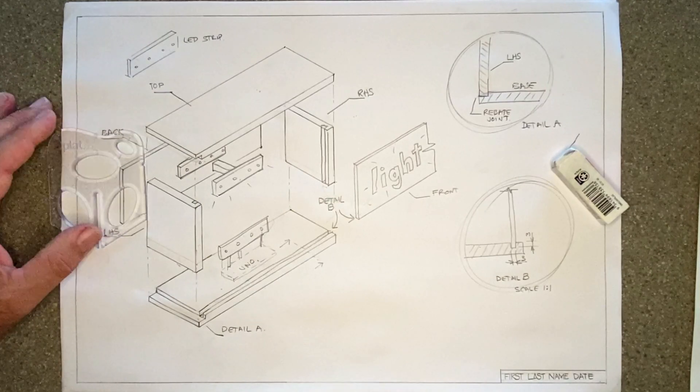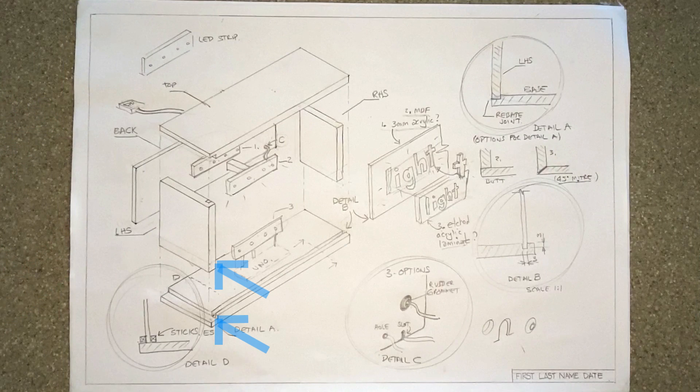Here's the key to becoming a more creative designer: try to think of three options of doing things. For instance, when we're joining the left hand side to the base we used a rebate joint, but how else could we do it? Well, we could use a simple butt joint or we could use a miter joint. Can we think of three ways to join the back onto the base? Well, one way for instance might be to simply use some little sticks glued each side of the plywood at the back. Maybe you could think of a few more ideas. What about getting the cable through the back piece? We could drill a hole, we could make a slot, or we could use a rubber grommet.